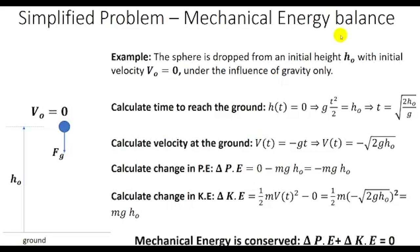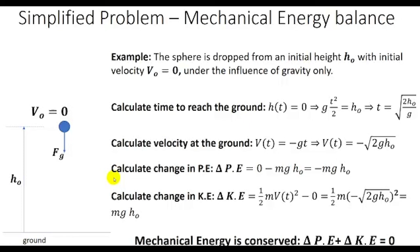Finally, we can make a mechanical energy balance for the simplified problem to verify that mechanical energy is conserved, since the only force acting on the sphere is gravity. In a simple example where the sphere falls freely under gravity from zero initial velocity at altitude h0, we calculate the change in kinetic energy and potential energy for the initial and final states. Adding them together shows that the total mechanical energy is conserved, as the total change is zero. Thank you for attending this online lecture.